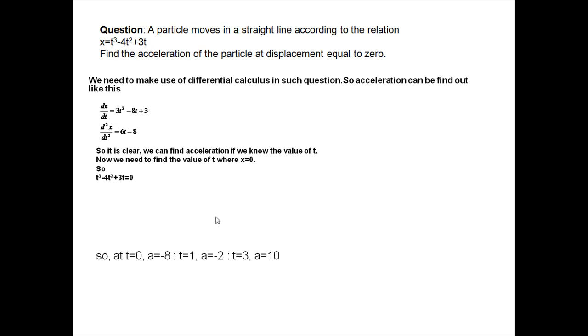Putting x = 0 in equation number 1, which is the given equation, and solving this equation we get three values: t = 0, 1, and 3. At these three times the displacement of the particle is 0. We can simply put these time values in the acceleration equation and find acceleration.